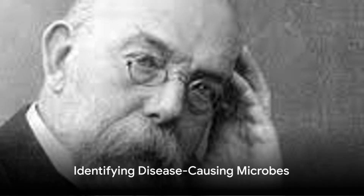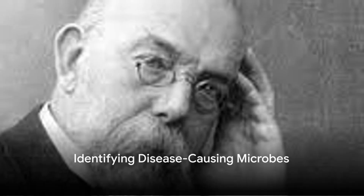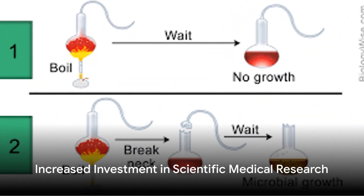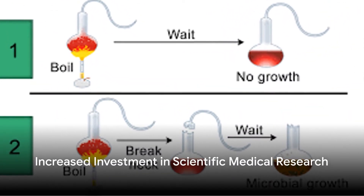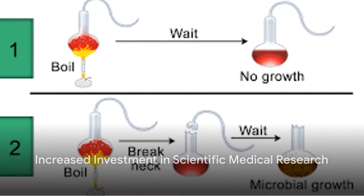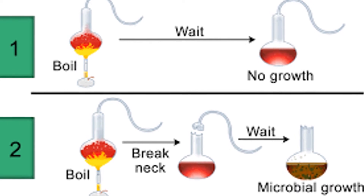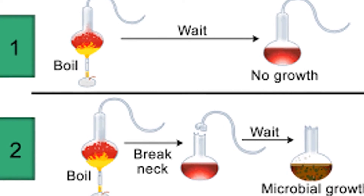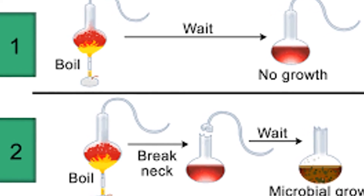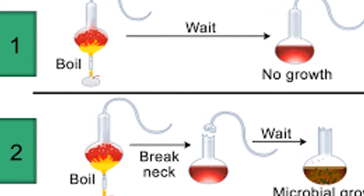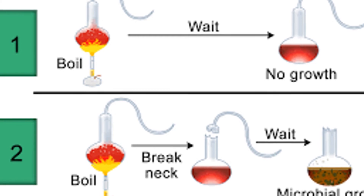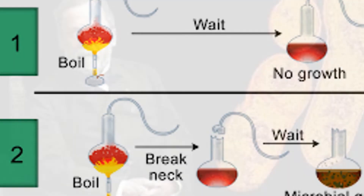Furthermore, Robert Koch became the first scientist to identify a microbe causing a specific disease, paving the way for the development of vaccinations. The germ theory also led to increased investment in scientific medical research, with more governments and businesses willing to pour money into scientists, equipment, and research projects.